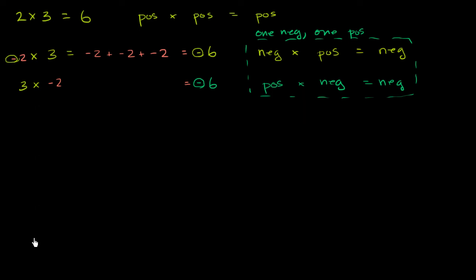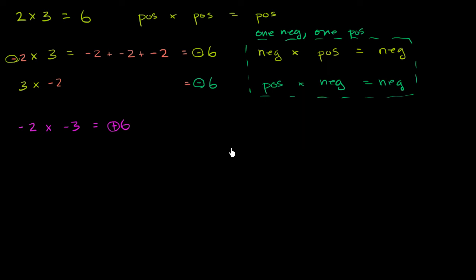Now let's think about the third circumstance: when both of the numbers are negative. If I were to multiply negative 2 times negative 3 — and this might be the least intuitive of all — I'll just introduce you to the rule here, and in future videos we'll explore why this makes mathematics all fit together. You say: 2 times 3 would be 6, and I have a negative times a negative. One way to think about it is that the negatives cancel out, and so you actually end up with a positive 6. So a negative times a negative gives you a positive number.